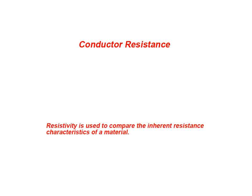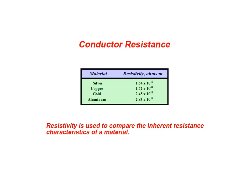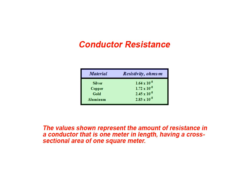The term resistivity is used to compare the inherent resistance characteristics of a given material. The values shown in the table above represent the amount of resistance in a conductor that is one meter in length having a cross-sectional area of one square meter. As previously stated, temperature is also a determining factor for resistance. The values shown here have been measured at room temperature or 20 degrees Celsius.